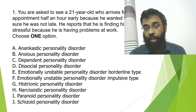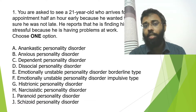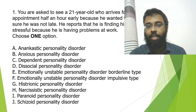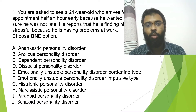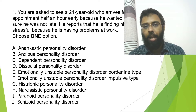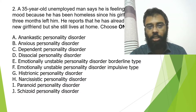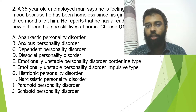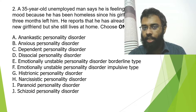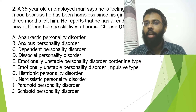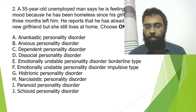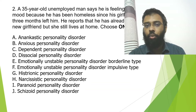You choose one option from A to J — a total of 10 options. For example, the first option might be anankastic personality and the last might be schizoid personality. The answer might be, say, dependent personality disorder. The next question is also linked to the first because the question stem is different but the options remain the same, so you can pick the same answer again. That is the EMI format.